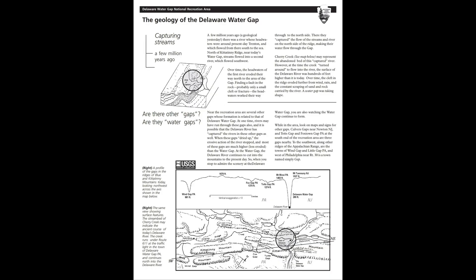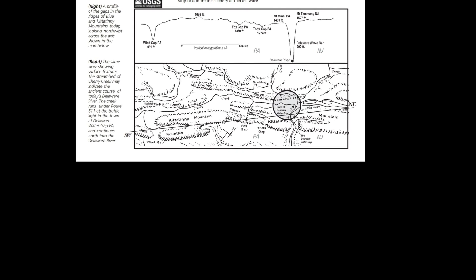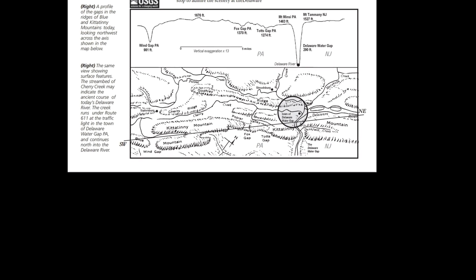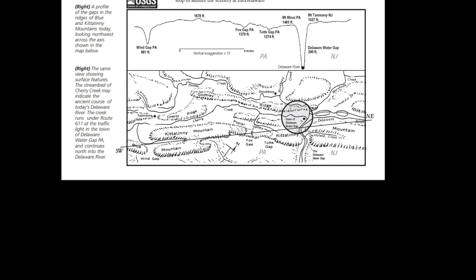Are there other gaps? Are they water gaps? Near the recreation area are several other gaps whose formation is related to that of Delaware Water Gap. At one time, rivers may have run through these gaps also, and it is possible that the Delaware River has captured the rivers in these other gaps as well. When these gaps dried up, the erosive action of the river stopped, and most of these gaps are much higher, less eroded, than the water gap. At the water gap, the Delaware River continues to cut into the mountains to the present day.